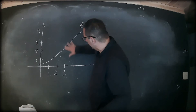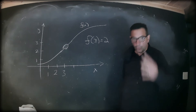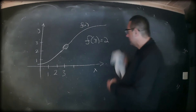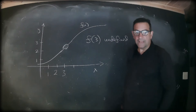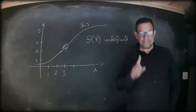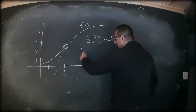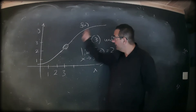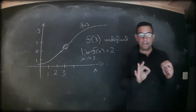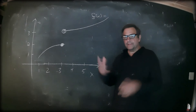Whether there is a filled dot or an open dot, the limit still exists at three and is equal to two. Let's unfill that dot — now we have an open circle at (3, 3), indicating we don't know the function's value at three. In this case we would write f of three is undefined, as there is no information given. Nevertheless, the limit of f of x as x approaches three is still equal to two, because the height from the left is going to two and the height from the right is also two. Thus the limit exists and equals two.